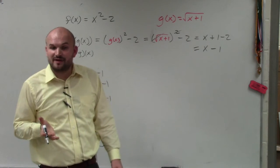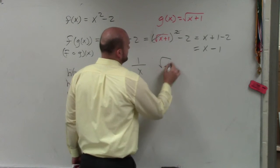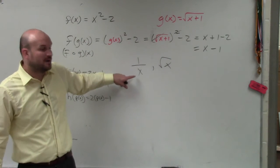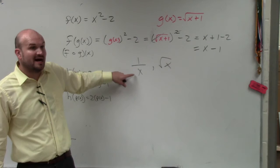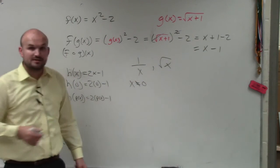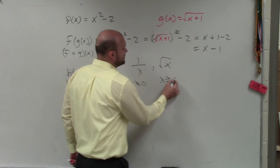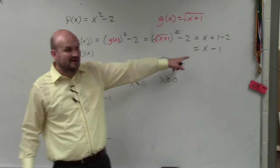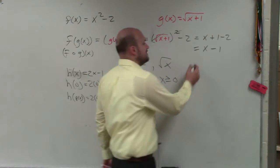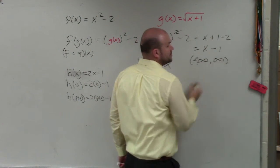Now we need to identify the domain. There are two constraints on the domain that we've talked about in this class. Either you do not have a part of your domain when you are dividing by 0 — so x cannot equal 0 — or you cannot take the square root of a negative number, so x has to be greater than or equal to 0. Do you have either one of those constraints here? No. So your domain is all real numbers, negative infinity to infinity.